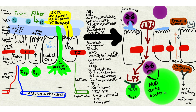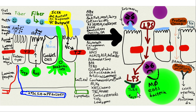LPS means lipopolysaccharide — an endotoxin released by bad gram-negative bacteria. There's also LTA, lipoteichoic acid, released by gram-positive bacteria. They're both endotoxins and both bad. The LPS get deep in the tissue and bind to our T helper lymphocytes, Th17 cells, which activates toll-like receptor number four, triggering a whole inflammatory response.